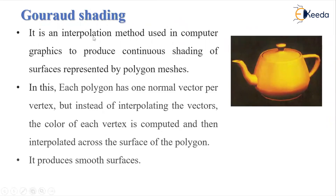The next one is Gouraud shading. It is an interpolation method used in computer graphics to produce continuous shading of surfaces represented by a polygon mesh. It gives more accuracy than flat shading. In this, each polygon has one normal vector per vertex. Instead of interpolating the vectors, the color of each vertex is computed and then interpolated across the surface of the polygon, producing smoother surfaces compared to flat shading.